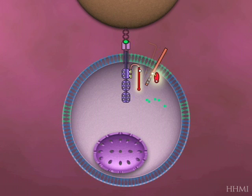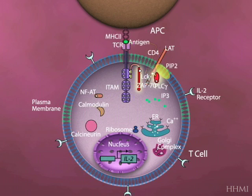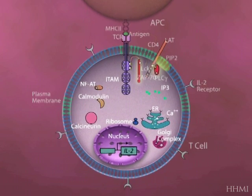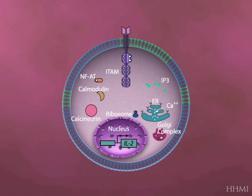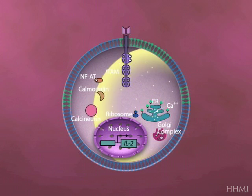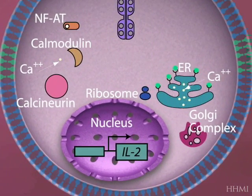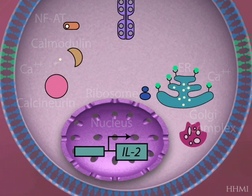The IP3 molecules diffuse in the cell and engage IP3 receptors that are typically present on the endoplasmic reticulum. This triggers waves of calcium bursts, with calcium being released from the endoplasmic reticulum — itself another second messenger.